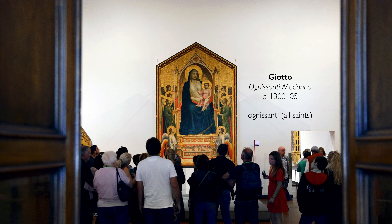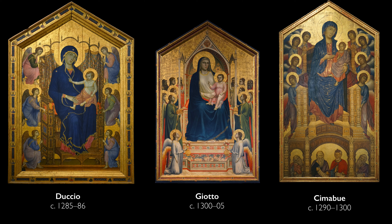The painting is enormous, but it's smaller than the Duccio and the Cimabue that flank it on the left and right. It was also produced a little bit later. When Giotto was painting this, he had seen both of those other paintings, and so while we certainly see many similarities, we also see some important innovations.